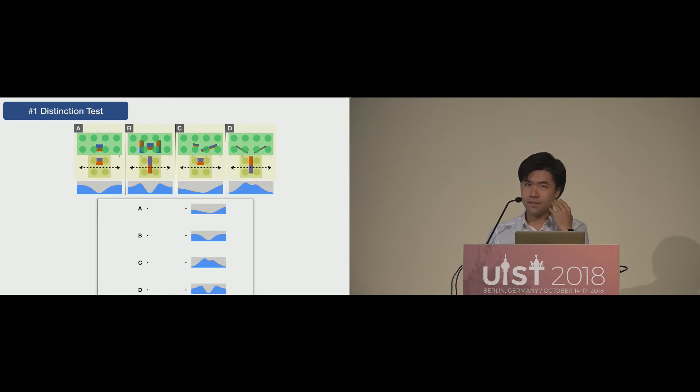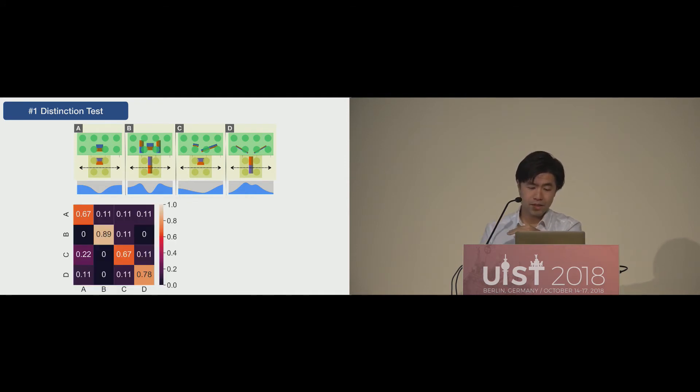The first user study was distinction test to ask subjects to guess which is the correct answer between ABCD and the four types of curves. The result is like this. I intentionally selected similar curves, so some subjects confused. But basically, the result was better than my expectation.